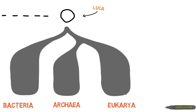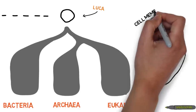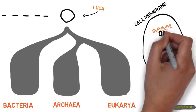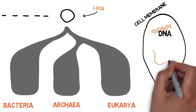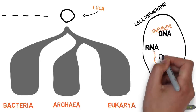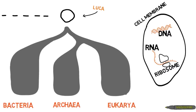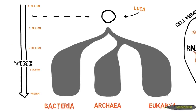All of the microbes in these domains contain a cell membrane, DNA, and RNA, and ribosomes to help synthesize proteins from their DNA code. Although at first glance microbes may look similar, microbes are incredibly diverse — so diverse that the last time many of them shared a common ancestor was 3.5 billion years ago.